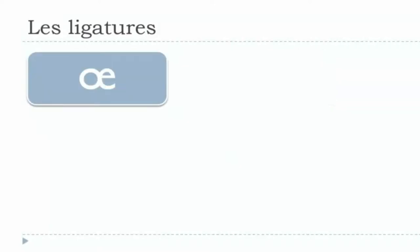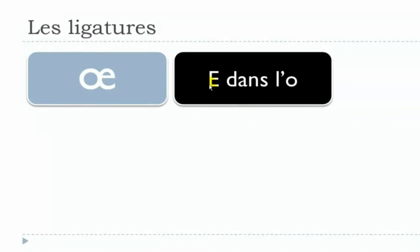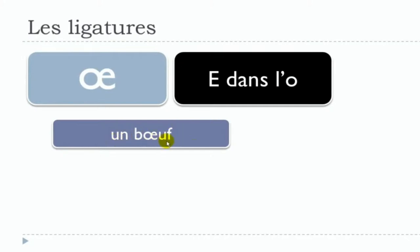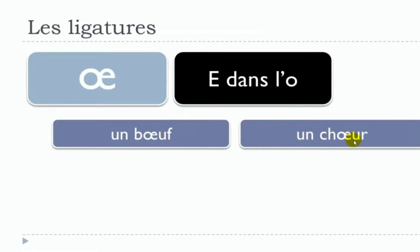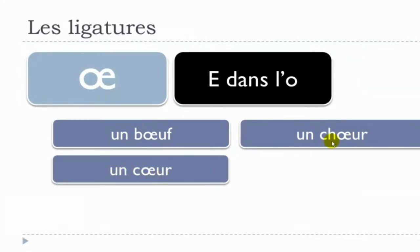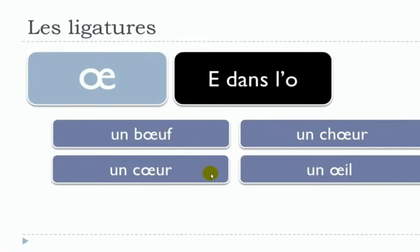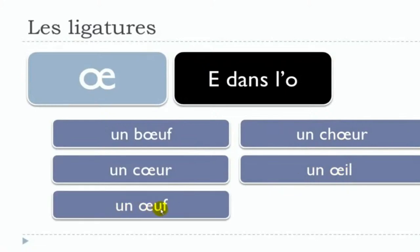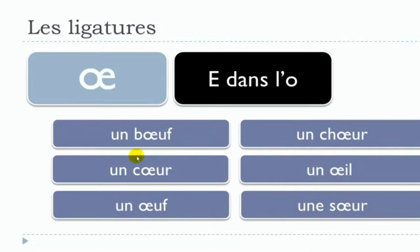The second ligature is E dans l'eau — the same concept, E inside O — because it's only one letter, O and E connected or glued together. This one is actually used a bit more often. Examples include: un bœuf, un cœur, un œil, un œuf, une sœur. It's quite interesting because even if you write them differently, you pronounce them the same way.